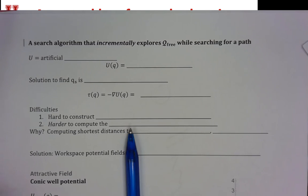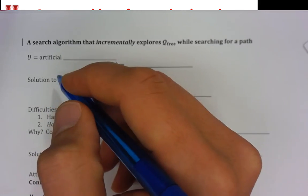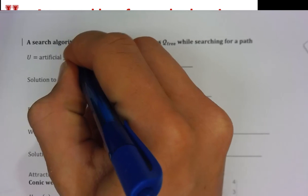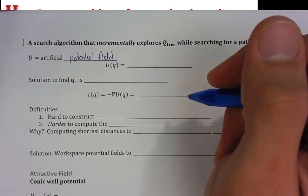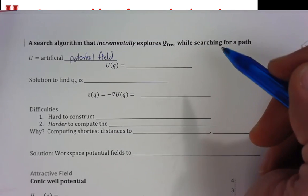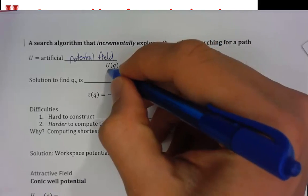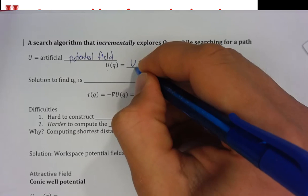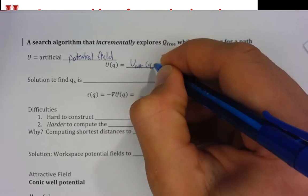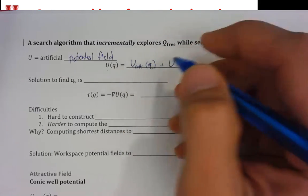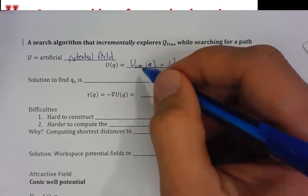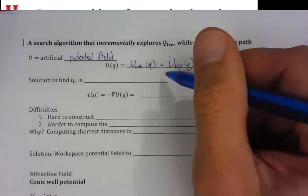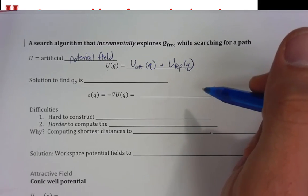We'd like to come up with a general-purpose technique that tells us how much torque to apply to each joint of our robot to push it towards a goal. The potential field U will be composed of two components: U_attractive, which is a function of our configuration and pulls us to a goal, and U_repulsive, which keeps us from bumping into obstacles. We can add these potential fields together to get a total control law applied to a robot manipulator.